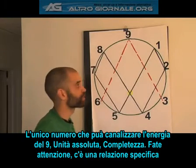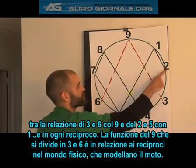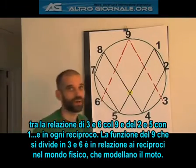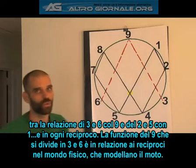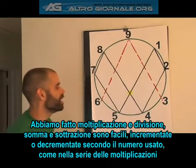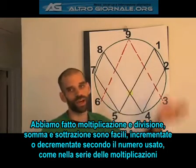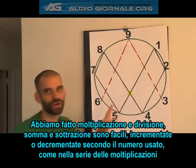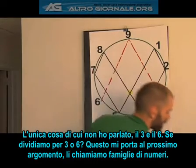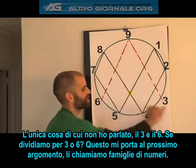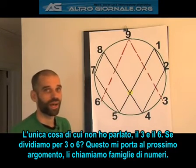That is the 1. I want you to pay attention to the fact, too, that there's a very specific relationship between how 3 and 6 relate to 9, and how 2 and 5 relate to 1 — or any reciprocals for that matter. The function of the 9 splitting into 3 and 6 is directly related to reciprocals in the physical world, which are modeling motion. So we did multiplication, we did division. Add and subtract is pretty easy — if you're adding any number you're going up in increments, if you're subtracting you're going down in increments. Now I didn't talk about what happens when you divide by 3 or 6, and that leads me into my next topic: family number groups.